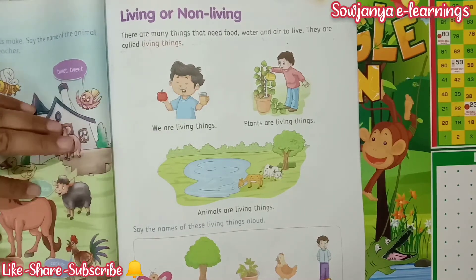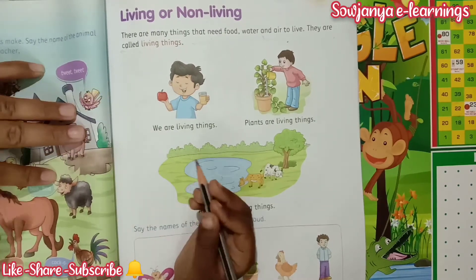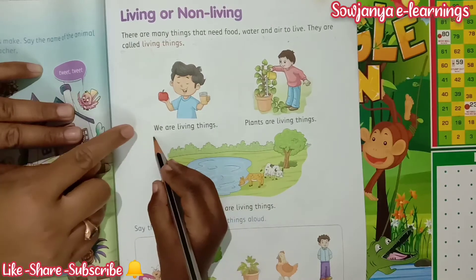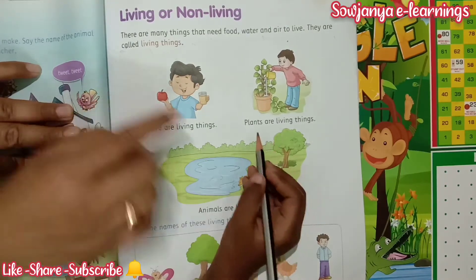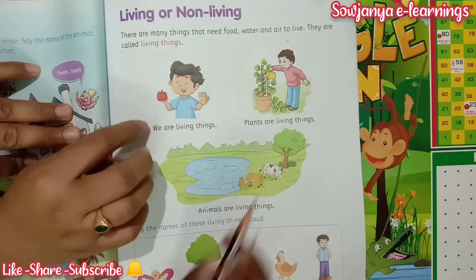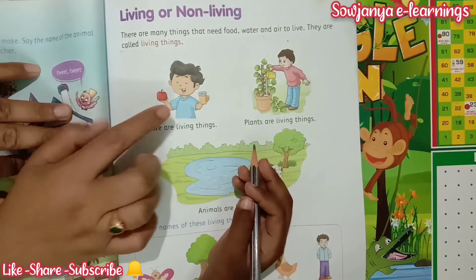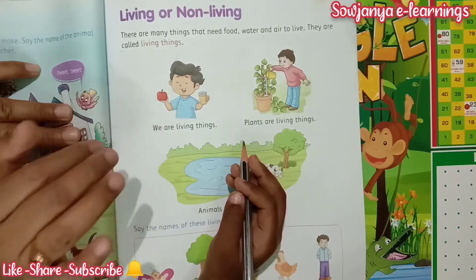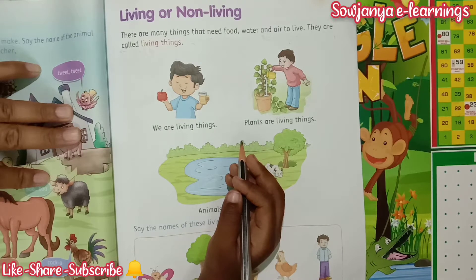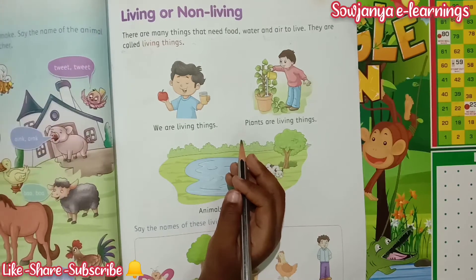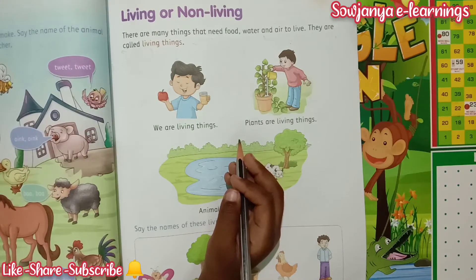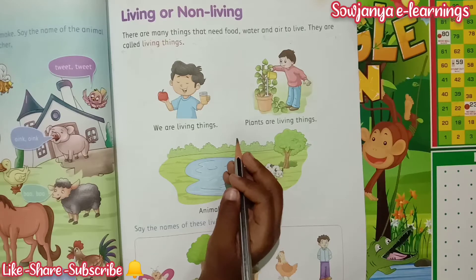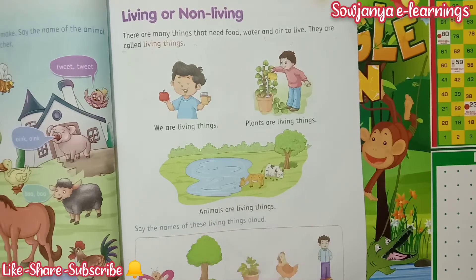Now we will see some examples of living things. We are living things — here, living things means human beings. We all are living things. Why? Because we will drink water, we will take breath, and we will grow also. We will move, everything we will do. So that's why human beings are living things.